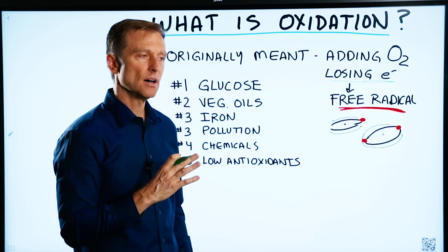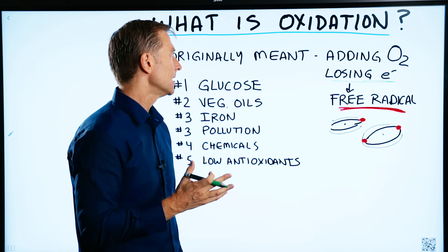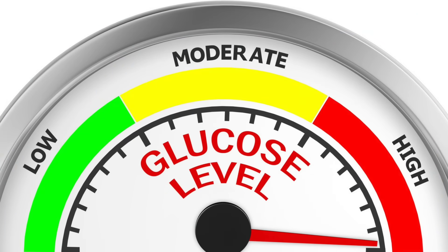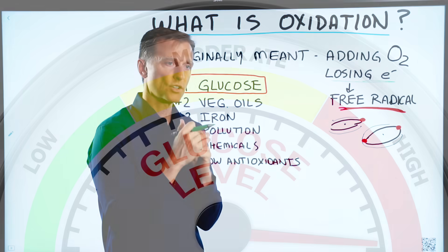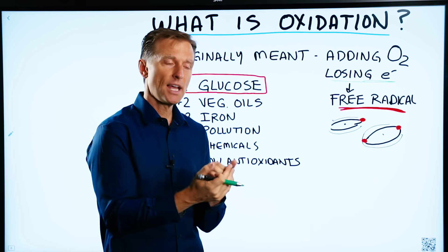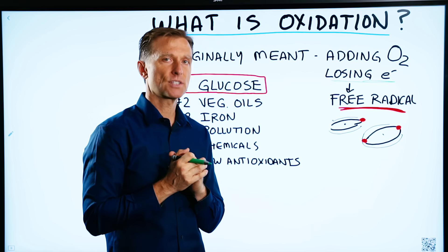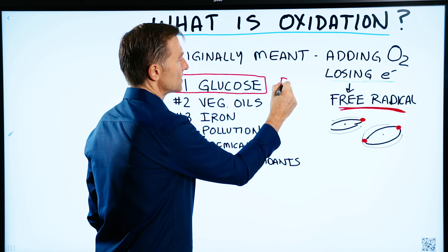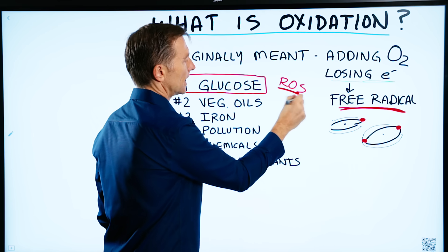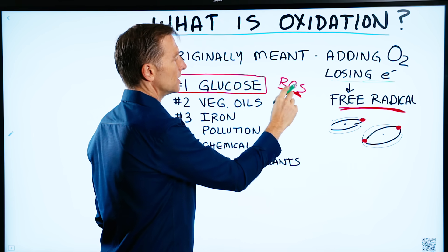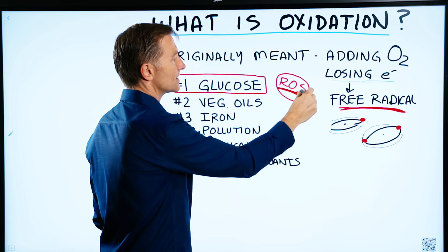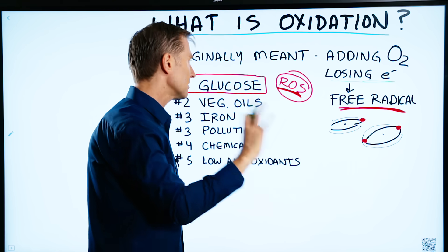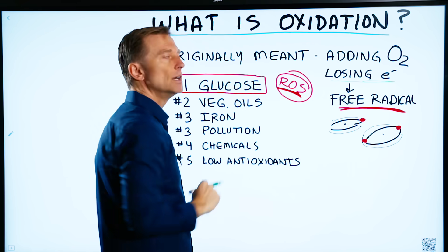The top oxidizer is glucose. If you have high sugar in your blood, your body's going to metabolize that and create a massive amount of oxidation — it's called ROS. You don't need to know the long-term name, but this is oxidation on steroids. So you have all this free radical damage from consuming a lot of glucose.